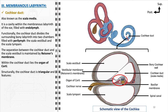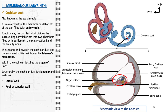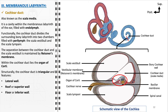Structurally, the cochlear duct is triangular in shape, featuring three distinct walls: the lateral wall, the roof or superior wall, and the floor or inferior wall. The lateral wall contains the stria vascularis, which plays a crucial role in maintaining the ionic balance of the endolymph. The roof is formed by Reissner's membrane, separating the cochlear duct from the scala vestibuli, while the floor, formed by the basilar membrane, supports the organ of Corti and separates the cochlear duct from the scala tympani.